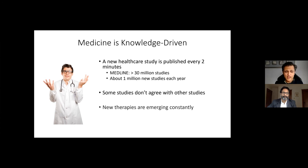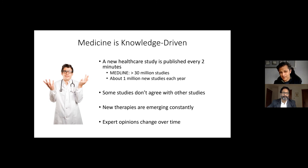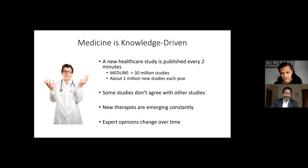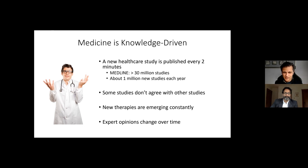New therapies are emerging constantly, and expert opinions change over time. A lot of randomized trials exclude 80 to 90 percent of the patient population you would normally see for that condition — and yet we're expected to take those results and apply them to the 80 to 90 percent that were excluded. That's not really a legitimate thing to do, so we get stuck in quite a conundrum.